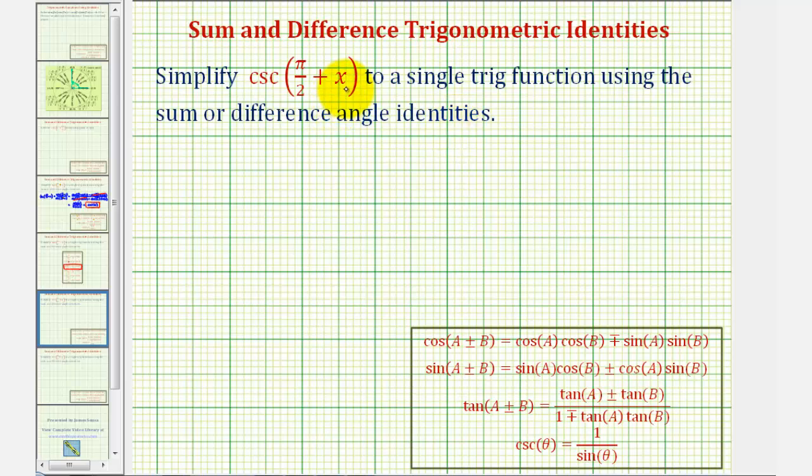But notice how we don't have an identity for cosecant of the quantity a plus or minus b. We only have one for cosine, sine, and tangent.